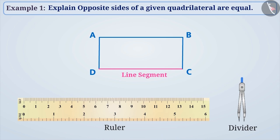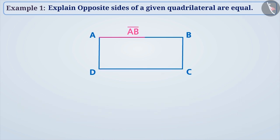Suppose we have to measure the length of the line segment AB. We will place one pointed end of the divider at point A and open the divider and place its other pointed end at point B. Now, maintaining the spread...